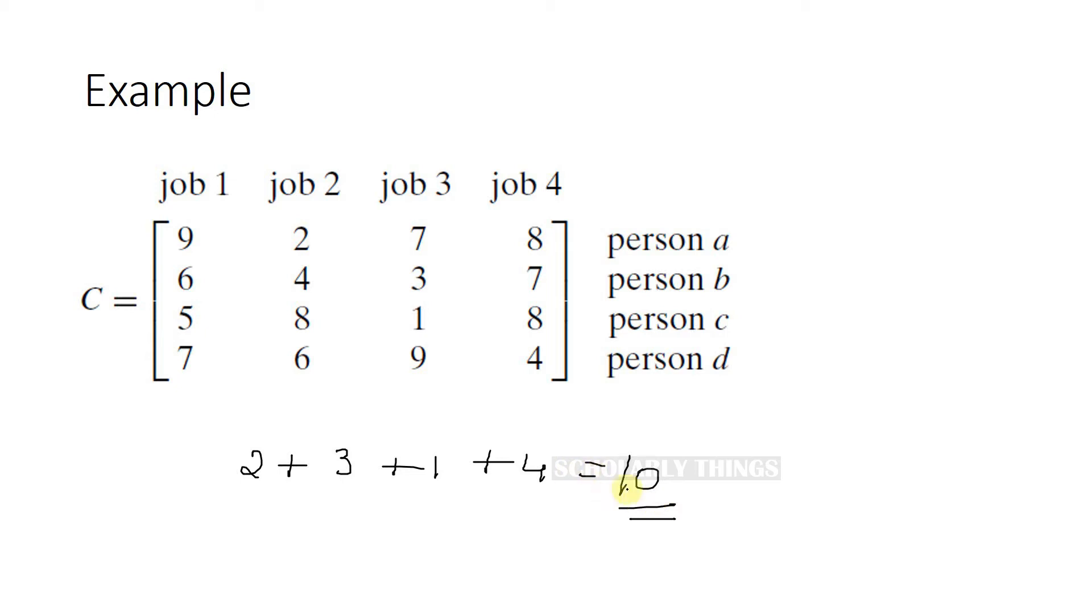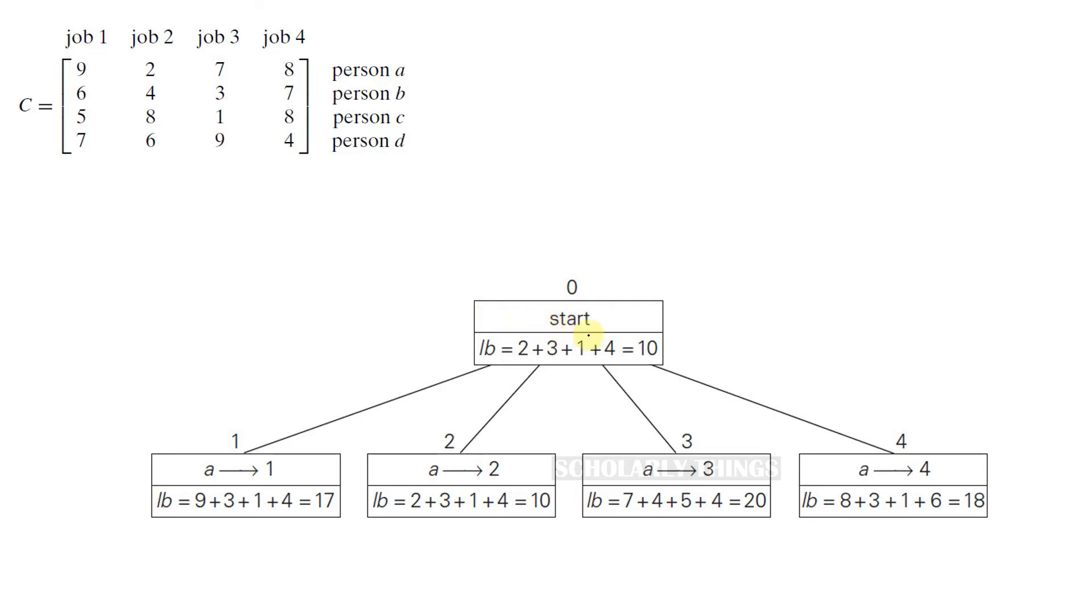But we need to apply the same kind of thinking for partially constructed solutions. For example, if you select 9 from the first row, the lower bound value will change to 17. To start with, the lower bound value is 10 like we saw previously. If we add all the smallest elements in every row, the sum will be 10. At node 0, no choices are made yet.